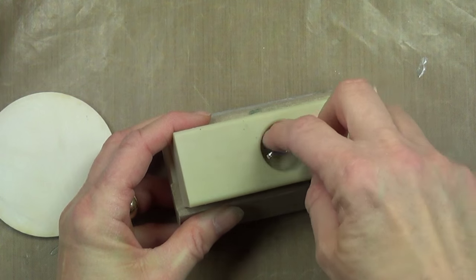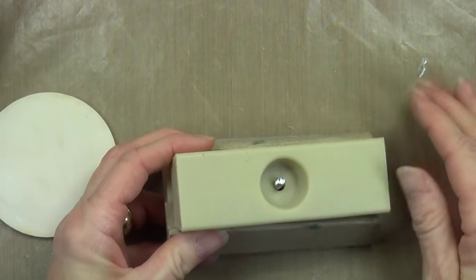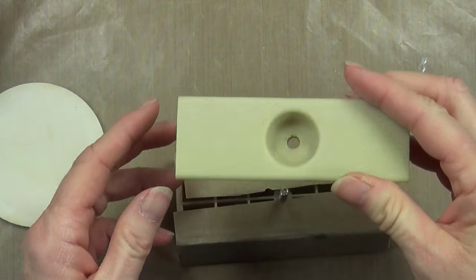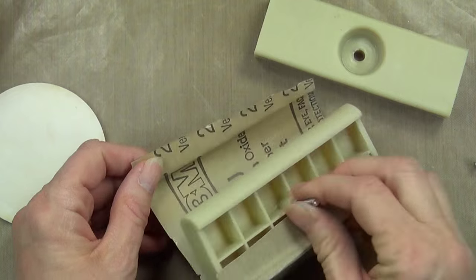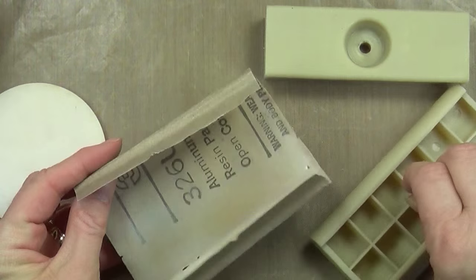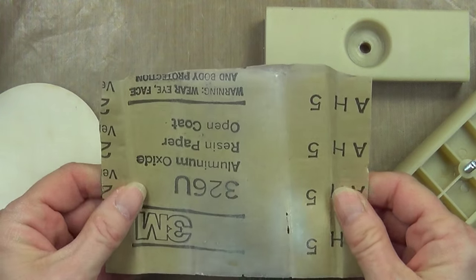It has this little bolt on it. You take the bolt off and then you can lift the top piece off and replace it with whatever grit of sandpaper that you are wanting to use.